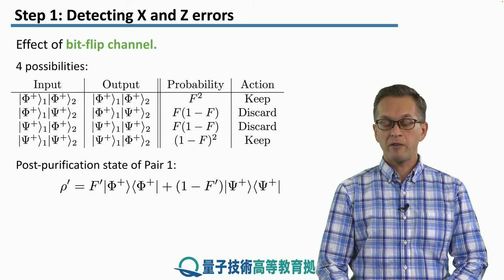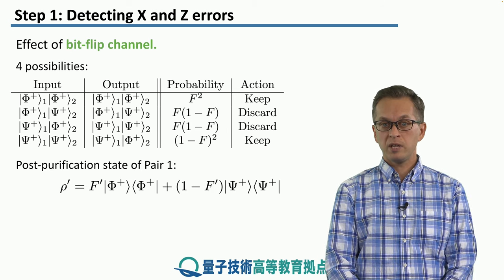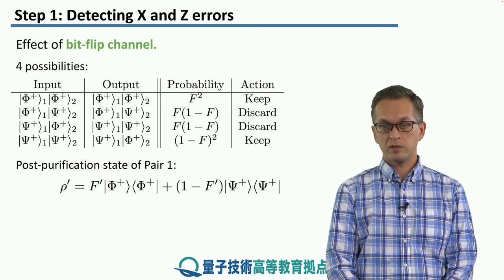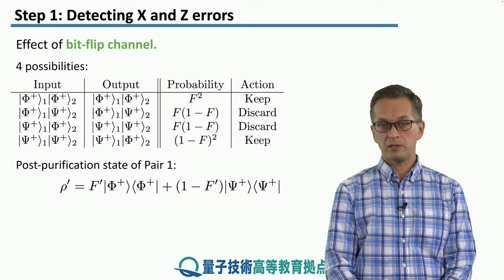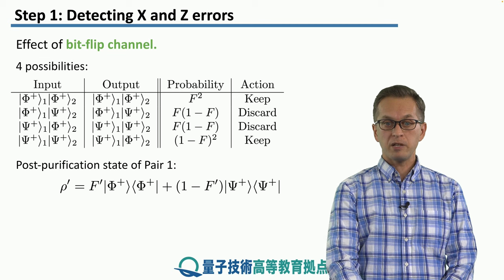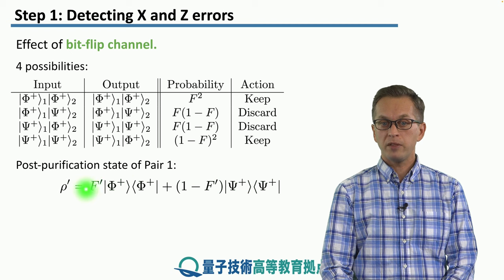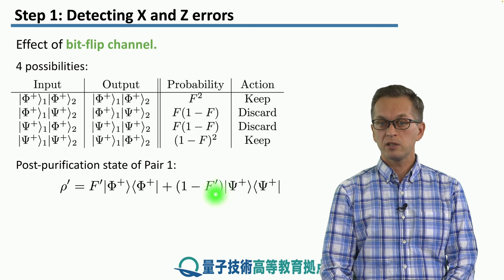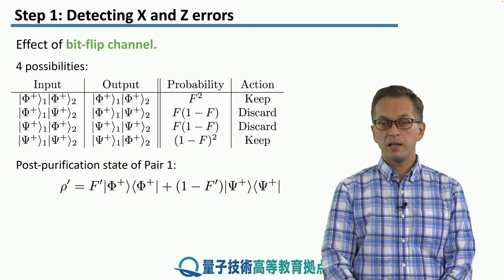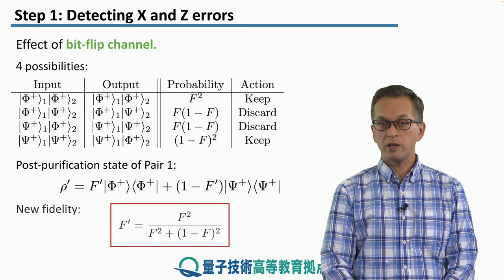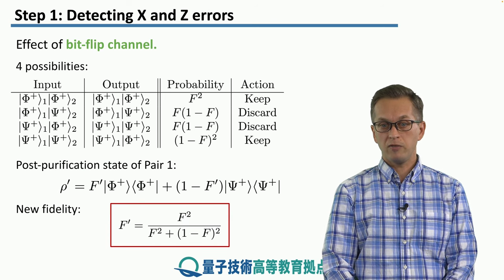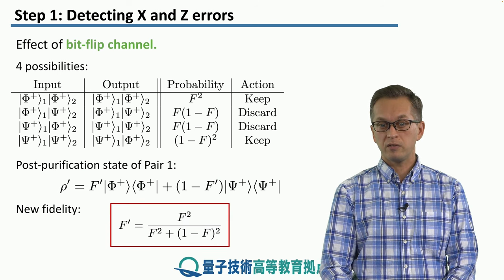So after we keep the first pair, what's the state of this post-purification state? It's given by the following density matrix, rho prime. It has the same form as before, but now these coefficients have changed in front of these terms. And F prime is related to our initial fidelity in the following way, by this nonlinear function.